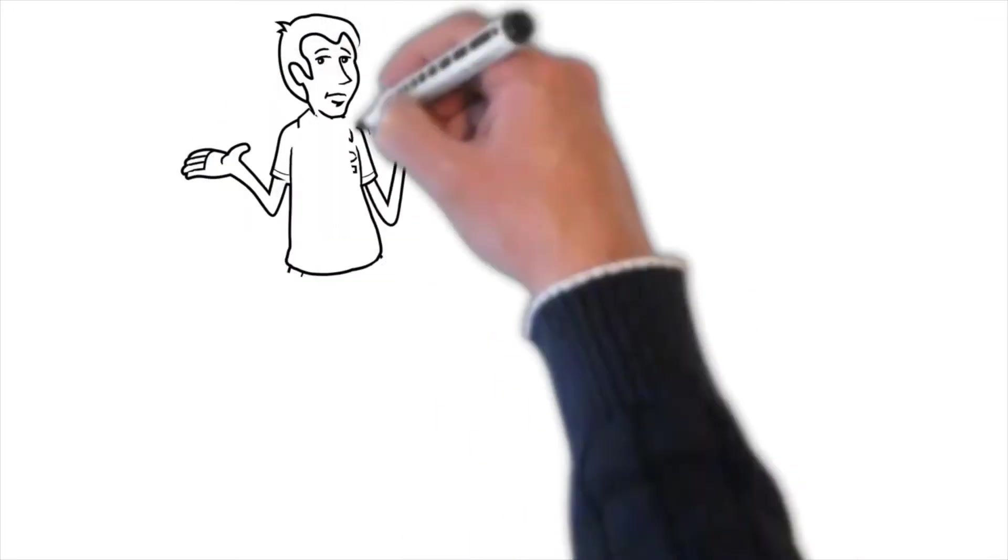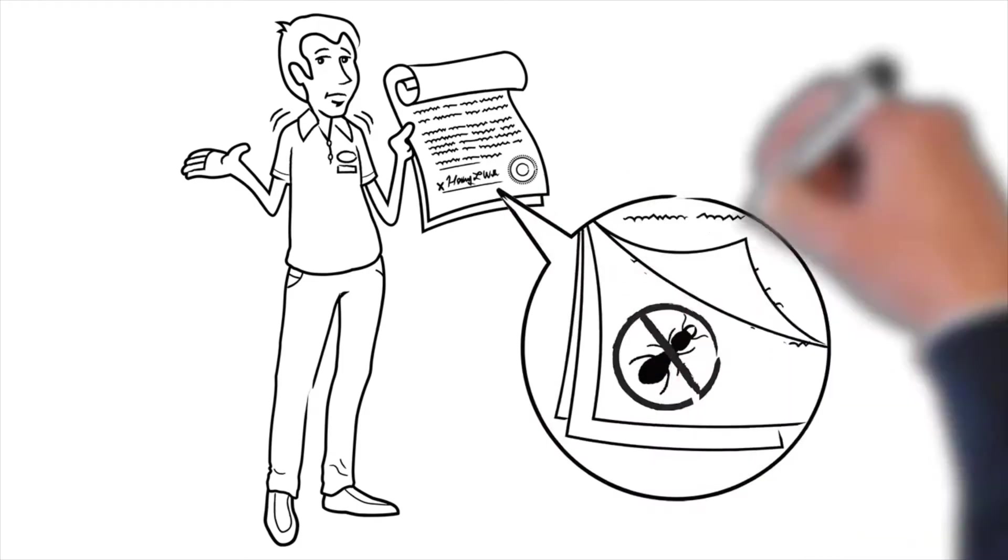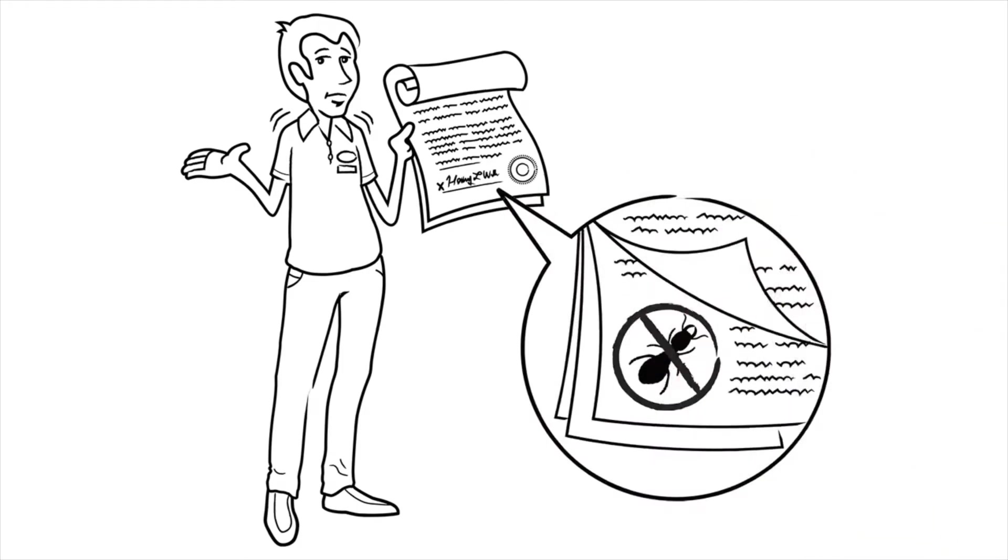And before you call your homeowner's insurance company to file a claim, termite damage is considered routine home maintenance. That means it's your responsibility.